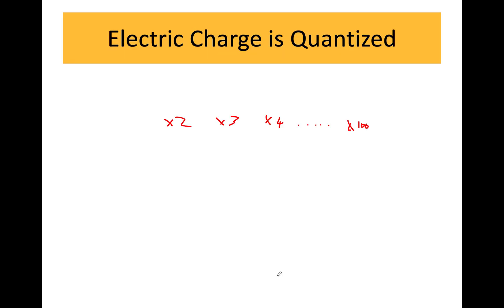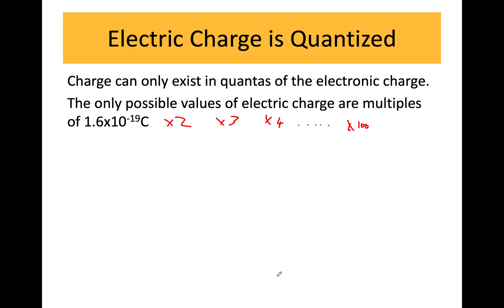Okay, so we did some more practice stuff, and then I discussed electric charge being quantized with you. So that means that they could only exist in multiples of 1.6 times 10 to the minus 19.